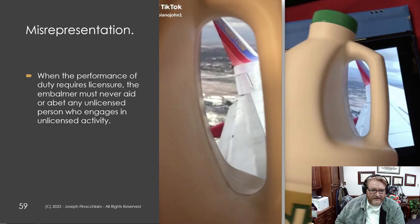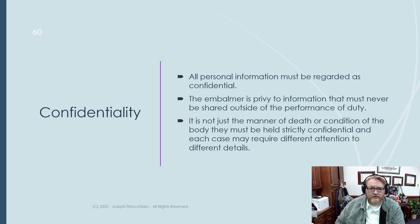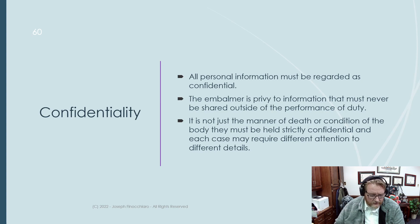When the performance of duty requires licensure, the embalmer must never aid or abet any unlicensed person who engages in unlicensed activity. Plain and simple — you do not allow people to do the work that are not legally permitted to do so, and you should never allow others to do it; you are risking your license in the process. All personal information must be regarded as confidential. The embalmer is privy to information that must never be shared outside of the performance of duty. It is not just the manner of death or condition of the body that must be held in strict confidence — if a service is private, it's private. Don't talk about it.